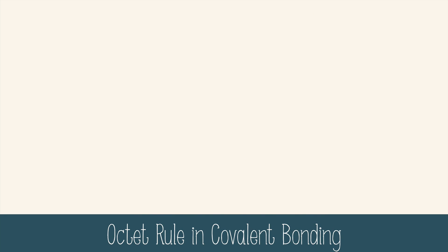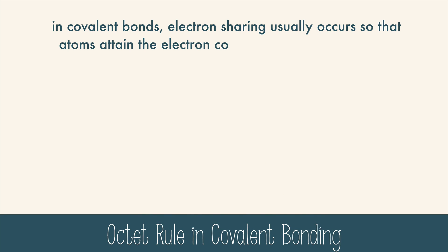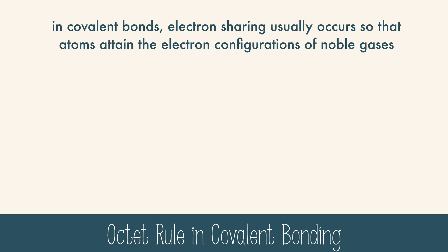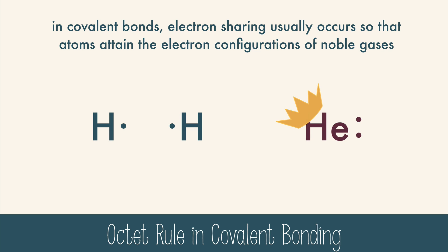In covalent bonds, electron sharing usually occurs so that atoms attain the electron configurations of the noble gases. These hydrogen atoms want to be like the noble gas helium, which has two valence electrons, making a full valence shell.